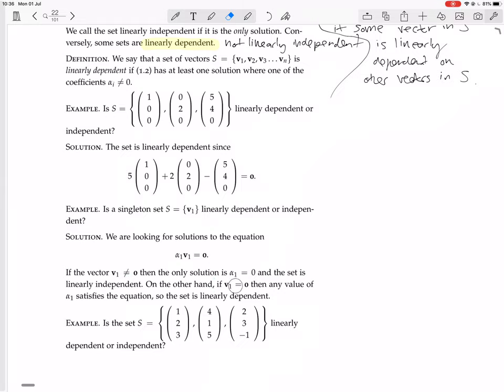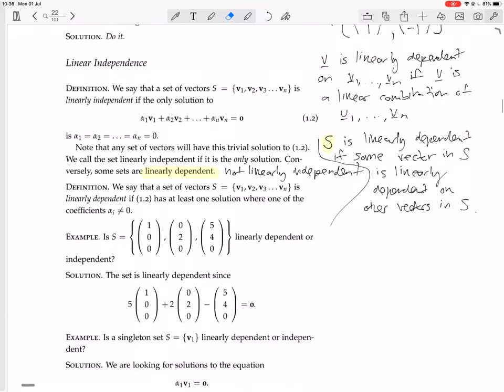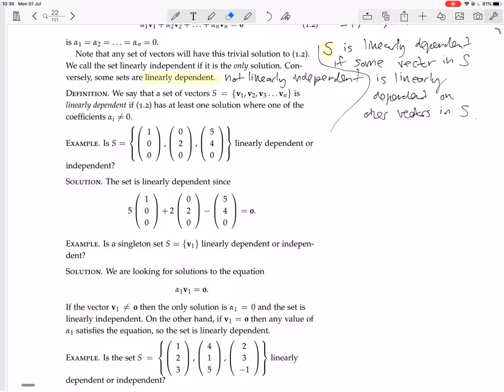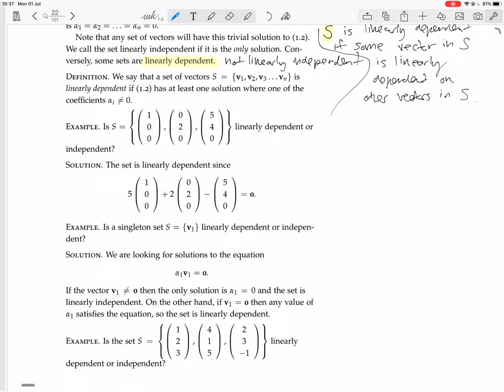On the other hand, if V1 equals zero, then any value of A1 satisfies the equation, so the set is linearly dependent. So according to the definition they've used, where a set is dependent if there's a non-trivial solution to linear combination equal to zero, that makes it clear why a set with just one element is independent if the vector in it is non-zero, but dependent if it's zero.